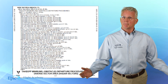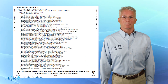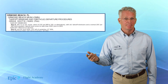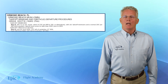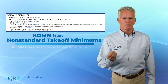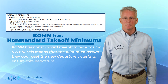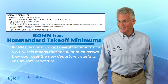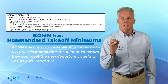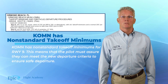Let's take a look at another example airport not far from New Smyrna — the Ormond Beach Airport, or KOMN. The KOMN airport has what we call non-standard takeoff minimums. Looking at our example, we see these non-standard minimums for runway nine. This means that the pilot must assure that they can meet the new departure criteria to ensure a safe departure.